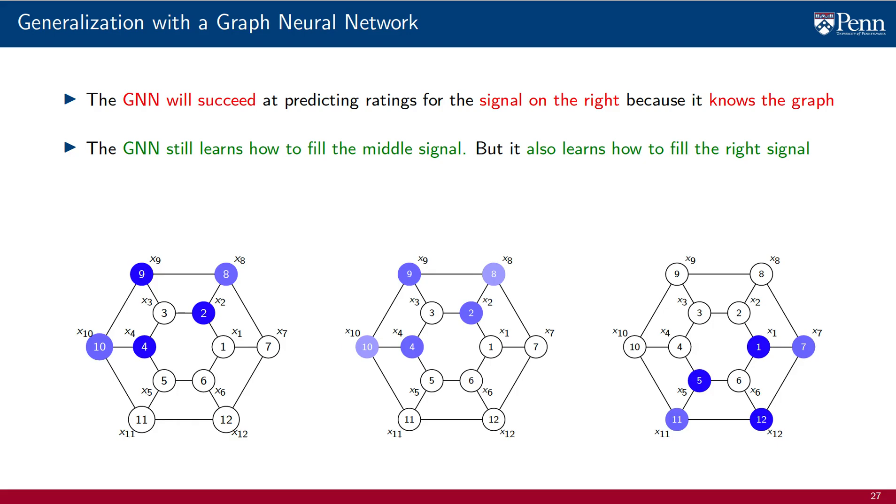This is because the local structure of both signals, the one on the left and the one on the right, are identical. This is a property that the filters that make up the layers of the GNN can exploit. The operations that a graph filter performs to predict the value of x6 for the signal on the right.